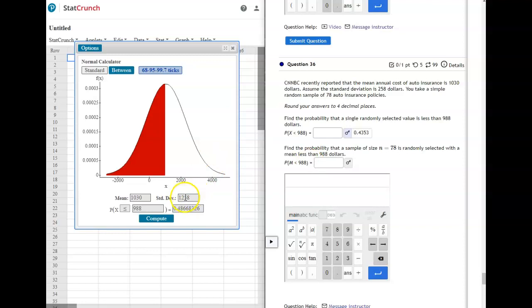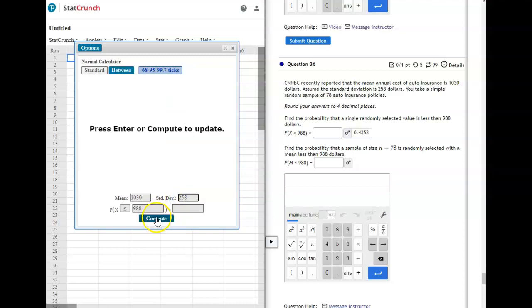Oh, that's why it's off. I put 1,000. Let's try that again. 258, compute. There we go. 0.4353.